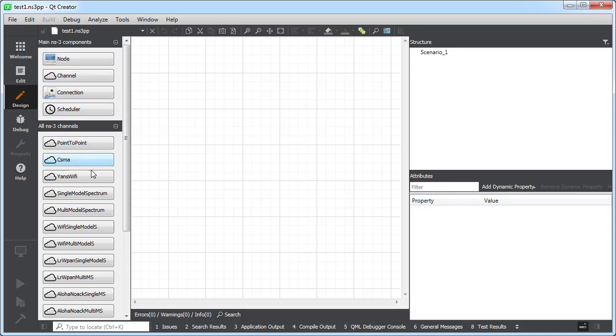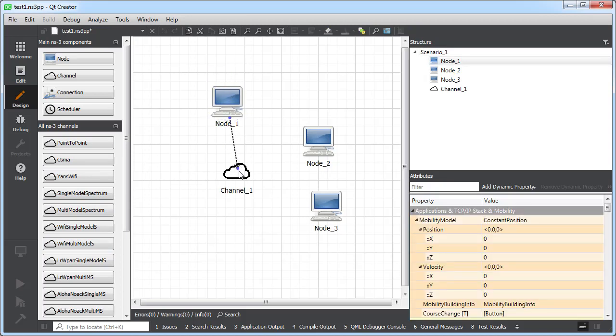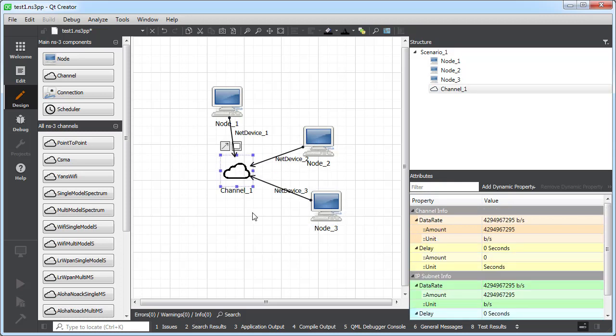From the prototype area, I can select the different objects for NS3. I can select different nodes by drag and drop to the work area. I can also select different types of channels. For example, I can pick this one, and then I can connect the different nodes with the channel. This way, I can build any topology for NS3 that I want.